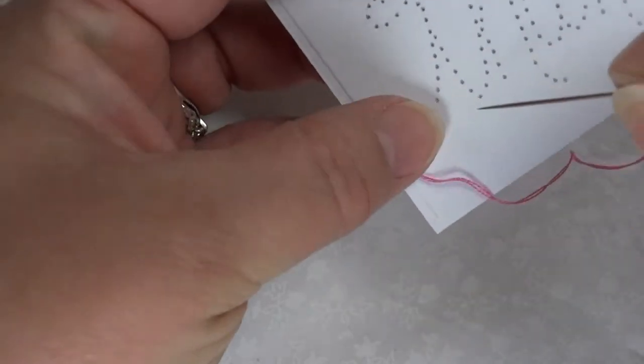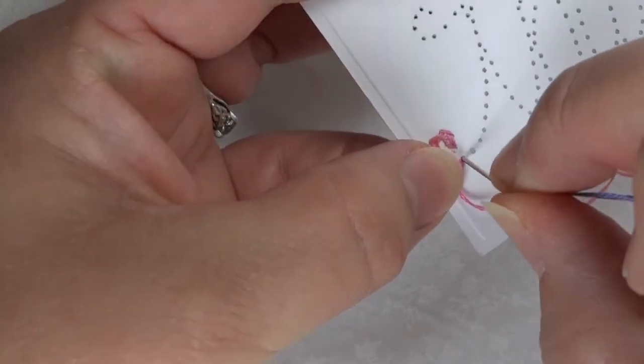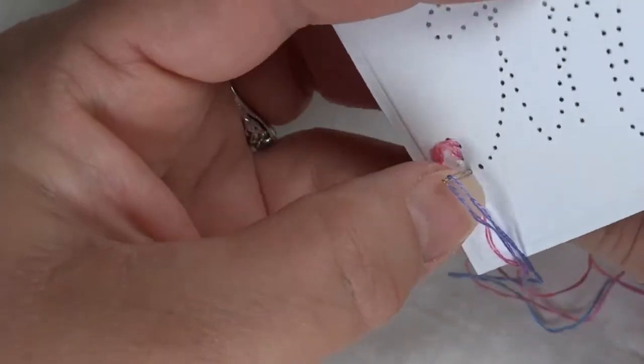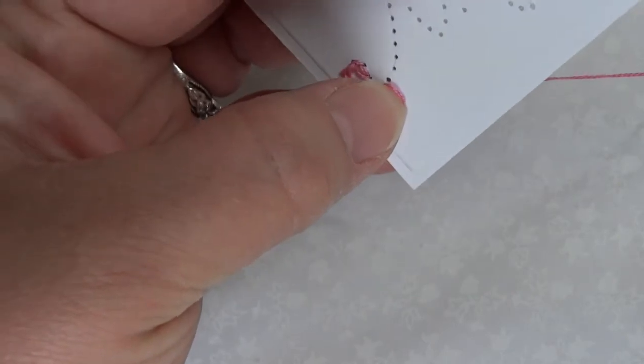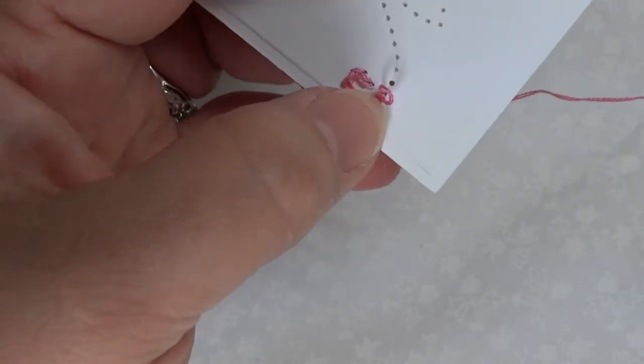You go into the hole that your thread came out of from the top, hang onto the thread with your nail and form a small loop.